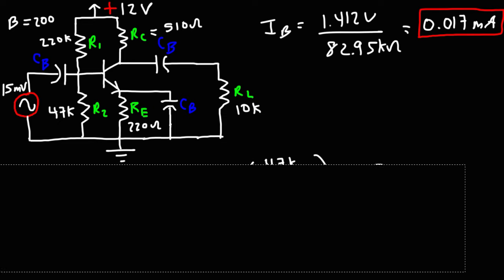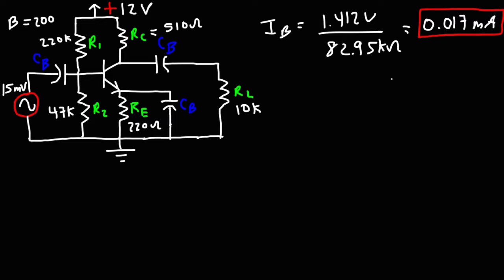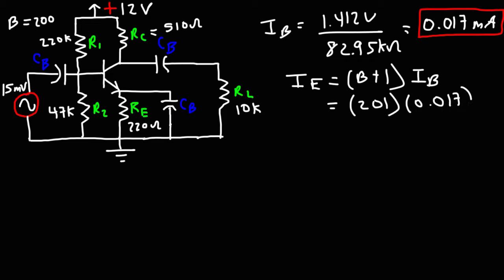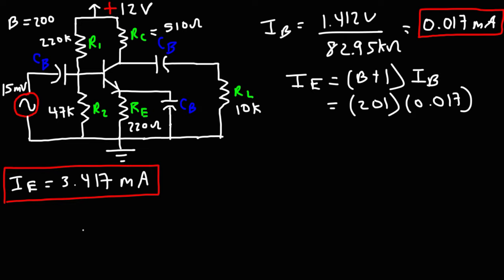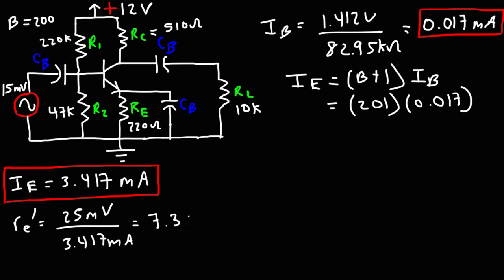Now that we have the base current, we can calculate the emitter current. The emitter current equals (beta plus 1) times IB. So that's 201 times 0.017 milliamps, giving an emitter current of 3.417 milliamps. Now that we know the emitter current, we can calculate the AC emitter resistance: 25 millivolts divided by 3.417 milliamps gives 7.32 ohms.